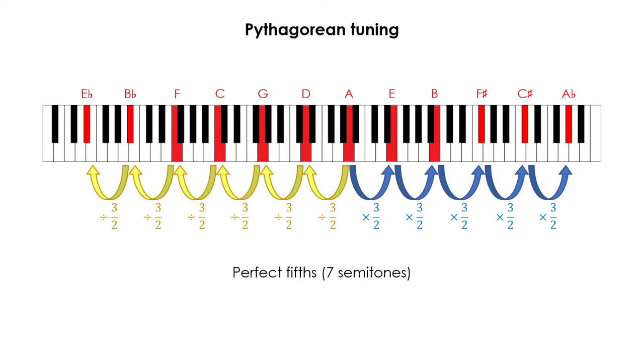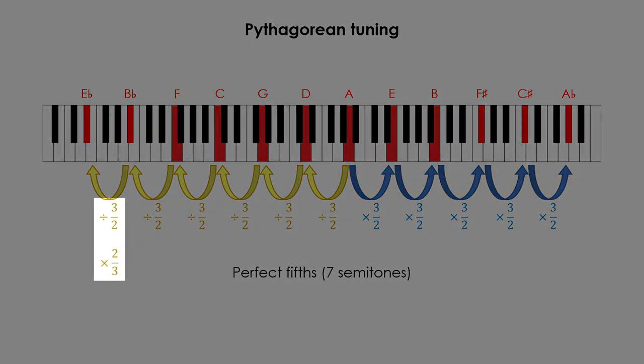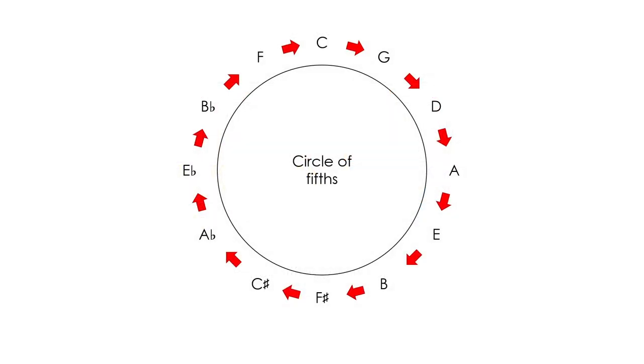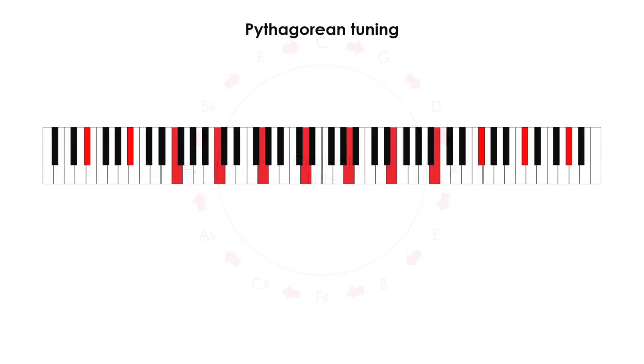Pythagorean tuning is based on perfect fifths with a 3 to 2 frequency ratio. That is, you start on an arbitrary note with an arbitrary frequency, and the other frequencies are calculated in steps of 7 semitones, multiplying or dividing by 3 over 2. Also remember that dividing by a fraction is the same as multiplying by that fraction inverted. If we arrange this sequence of notes in a circle, we obtain the well-known circle of fifths. To find the rest of the notes, again, the easiest way is to take a note in any octave and find it in other octaves, multiplying or dividing by 2.